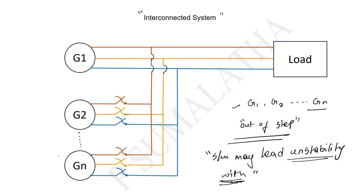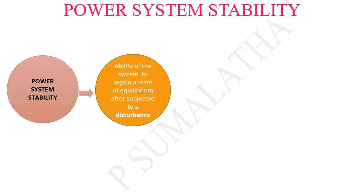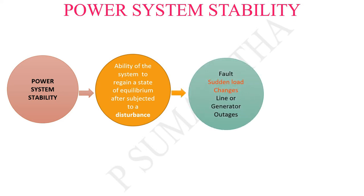Therefore the power system stability has been restated as the ability of the system to regain a balanced condition after being subjected to a disturbance. Once the system is subjected to a fault, if it is able to come back to normal condition then the system is under stable condition. A disturbance is nothing but a fault, a sudden load change, or the tripping or outages of transmission lines or generators. These disturbances are categorized into two different types in stability studies: large disturbances and small disturbances.